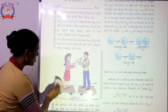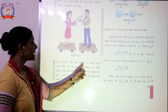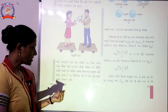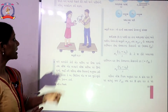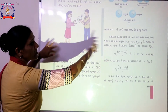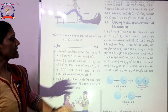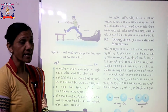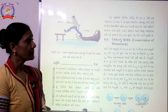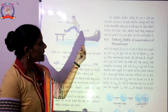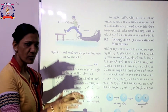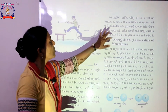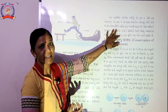બન્ને બાળકોને કોઈ એક પાટ્યા ઉપર ઊભા જોડો. આ પ્રવૃત્તિમાં દર્શાવેલ પાટ્યુ — ક્રિયાબળ ને પ્રતિ ક્રિયા બળ — નો અવ્લોકન કરી શકાય. We will take this step.